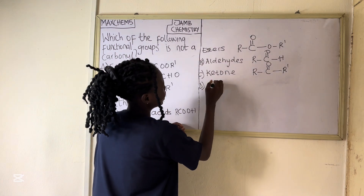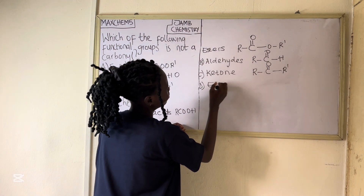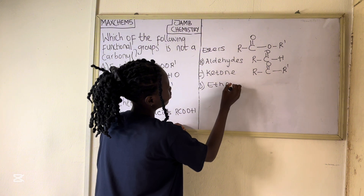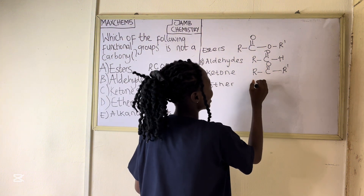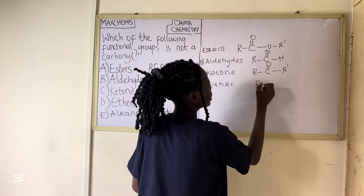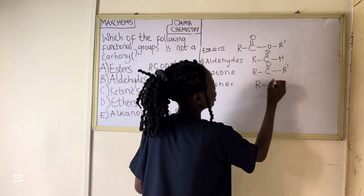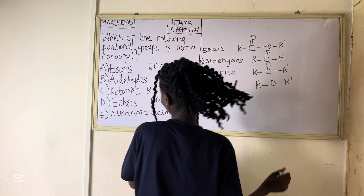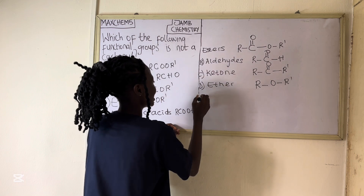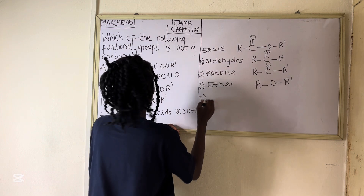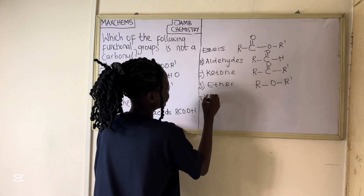Now we have the ether: R bonded to O, and O bonded to R'.